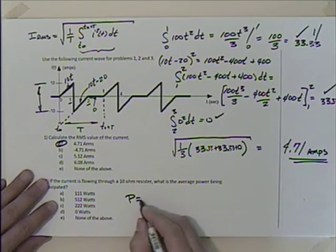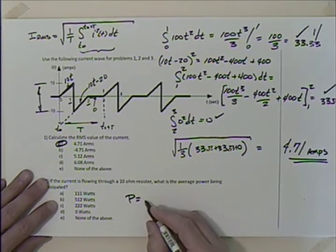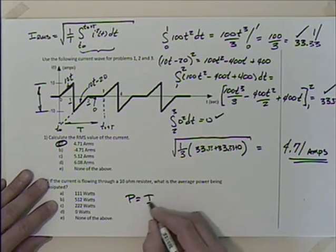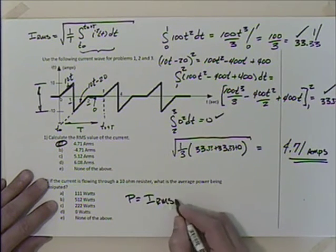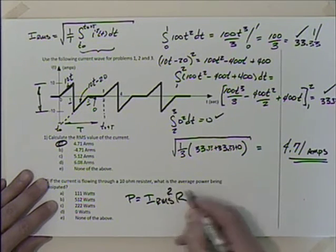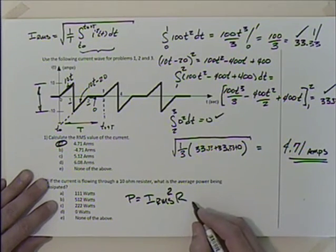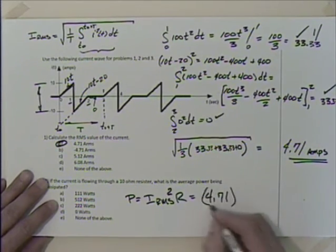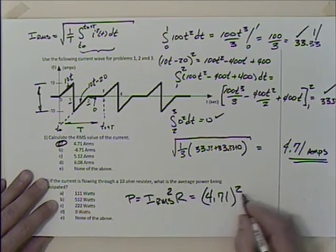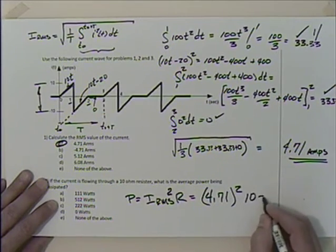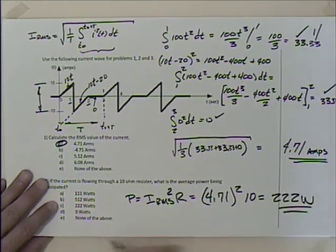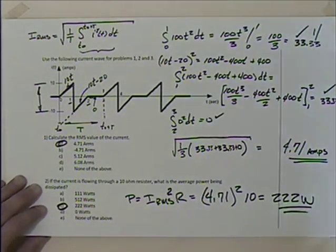For average power we don't use the half-formula since we're not dealing with a sinusoidal function expressed as a peak — we use RMS directly: P = I_RMS² × R = (4.71)² × 10 ≈ 222 watts. Answer: C.